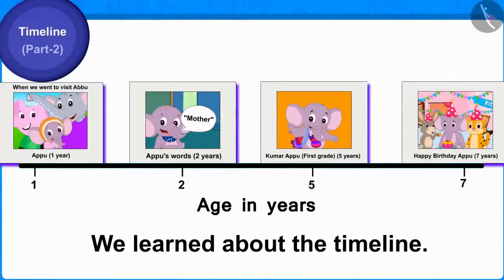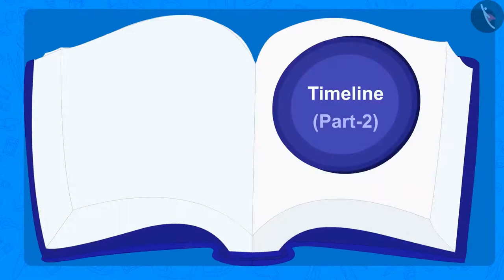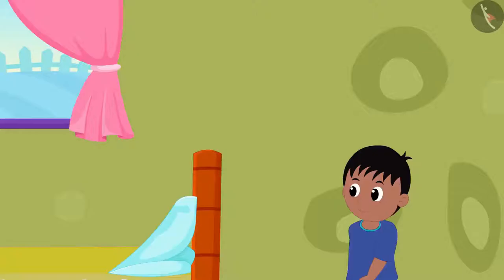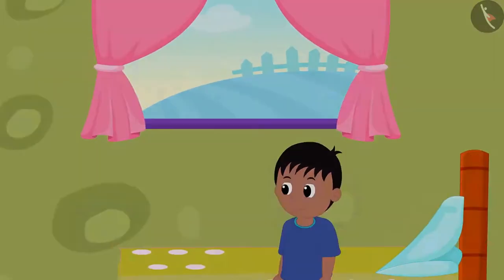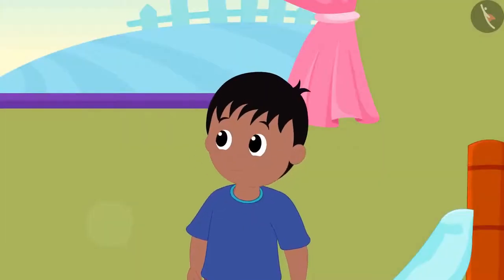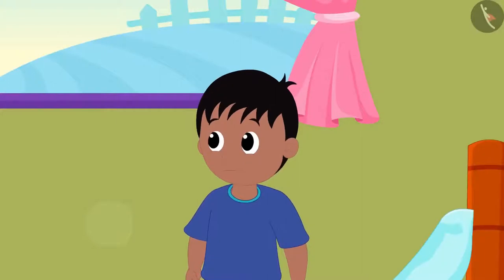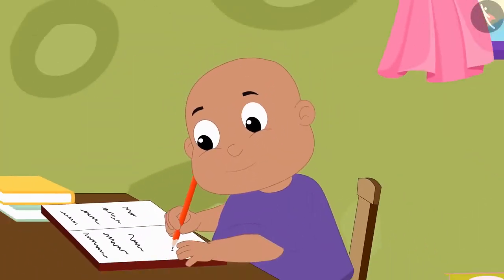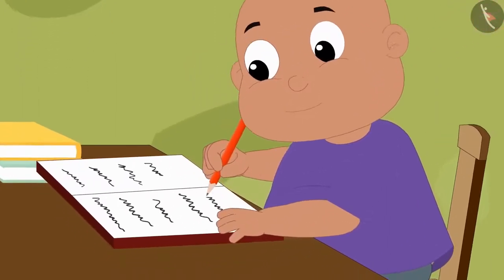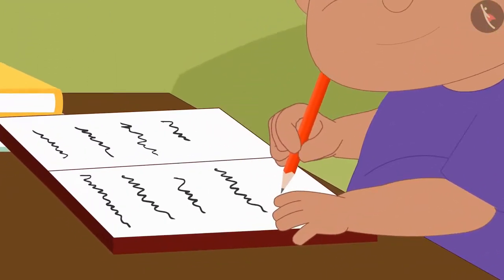Hello children, in the previous video we learned about the timeline. In this video we will learn more about it. Raju has come to play at Babalu's house. Raju kept waiting for Babalu for a long time, but Babalu has been writing something in a diary since quite some time.